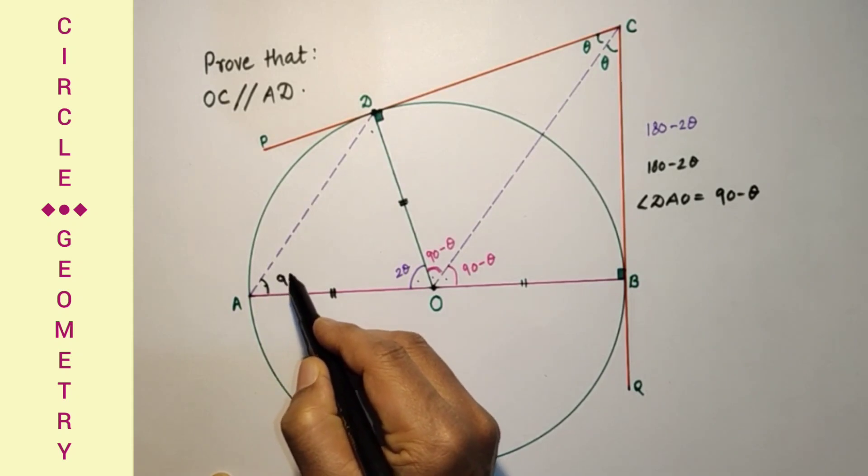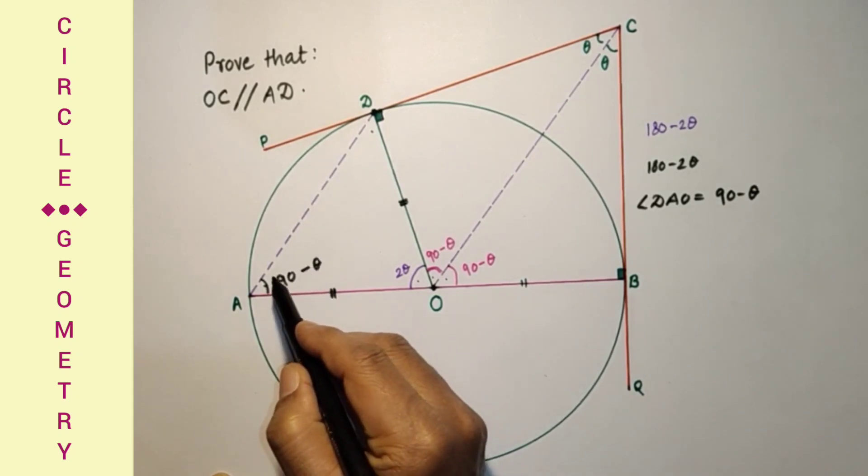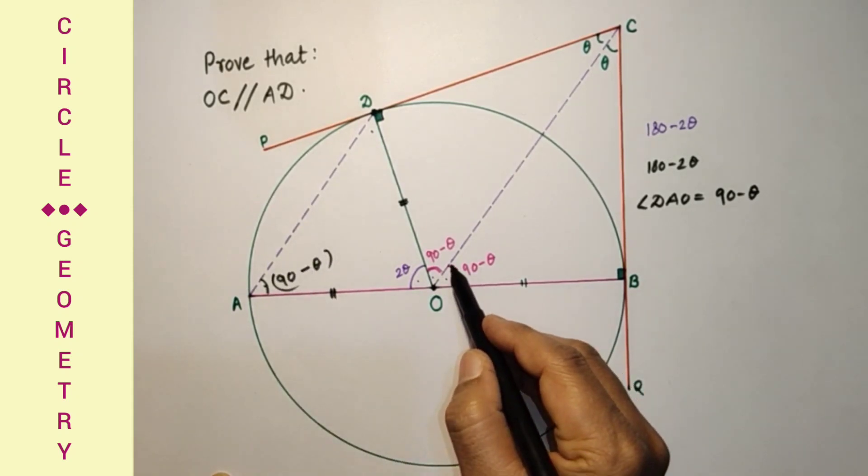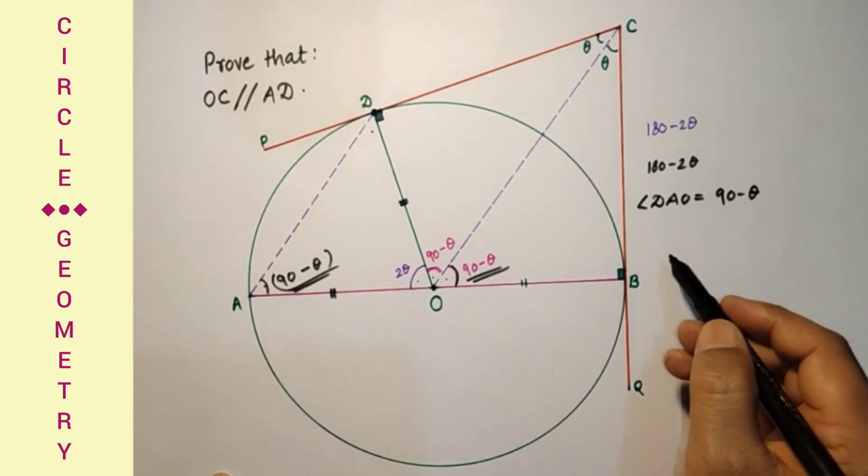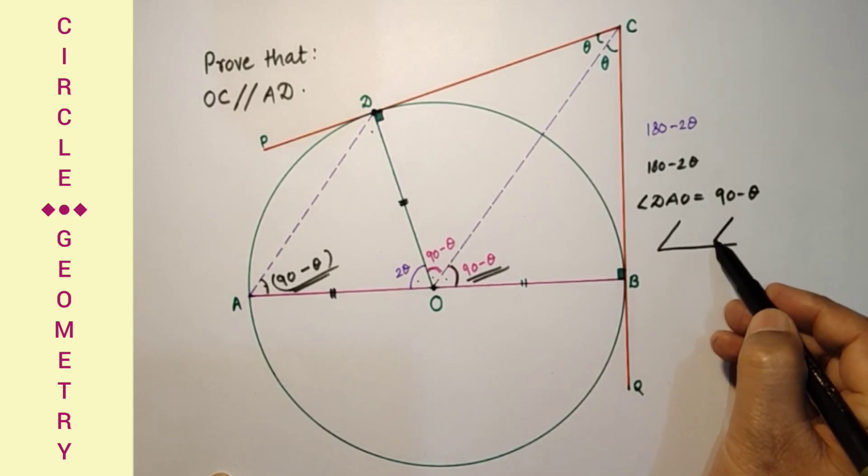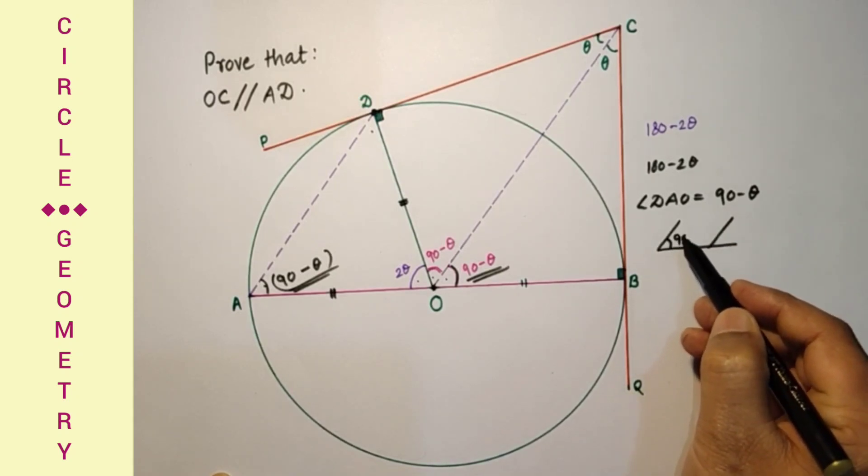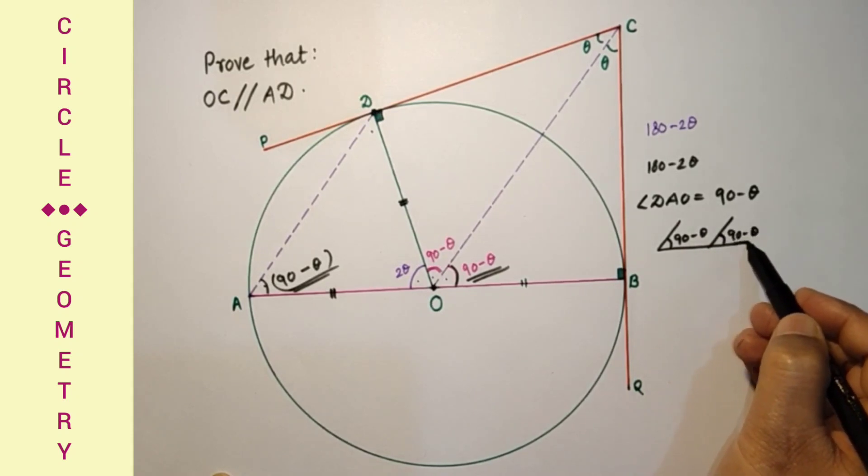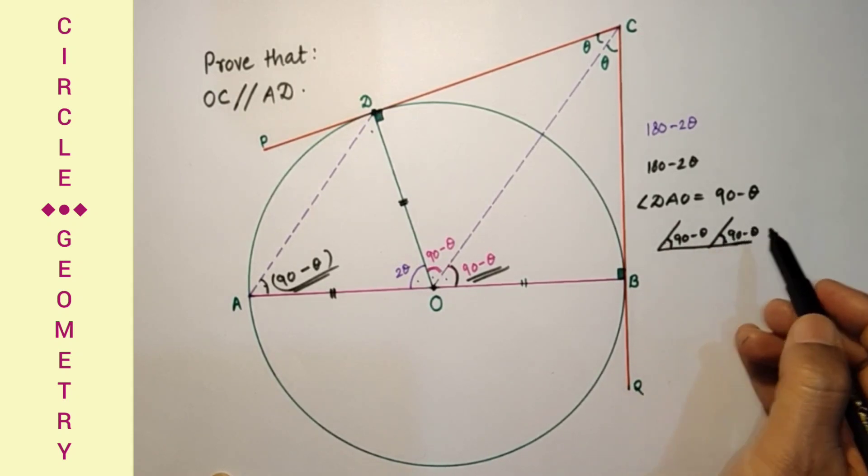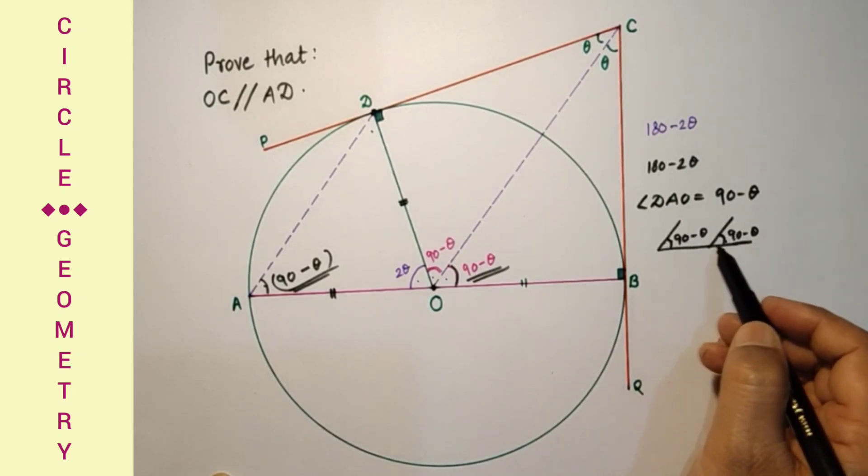This angle we found 90 minus theta, and this angle is 90 minus theta. This angle is 90 minus theta, and this angle is 90 minus theta. And these two are corresponding angles, and corresponding angles are equal.